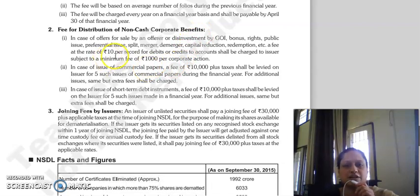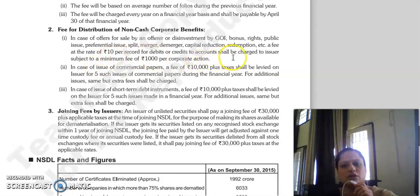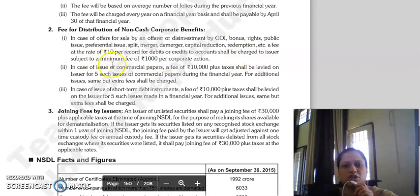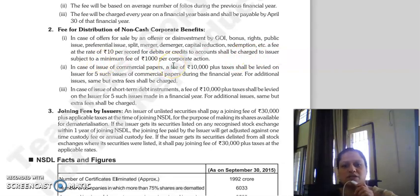The fee at the rate of Rs. 10 per record for debit or credit to accounts will be charged to the issuer, subject to a minimum of Rs. 1,000 per corporate action.